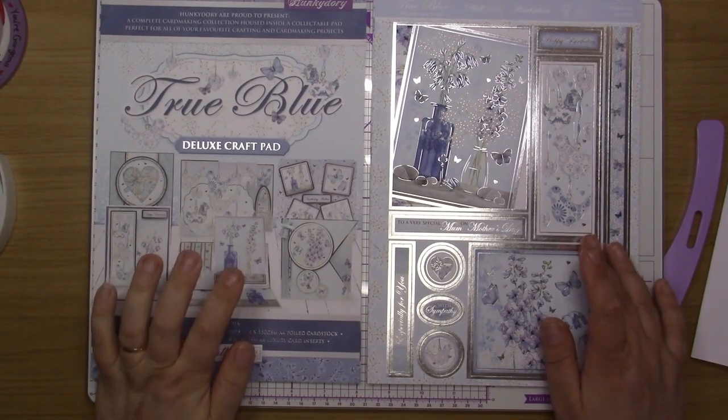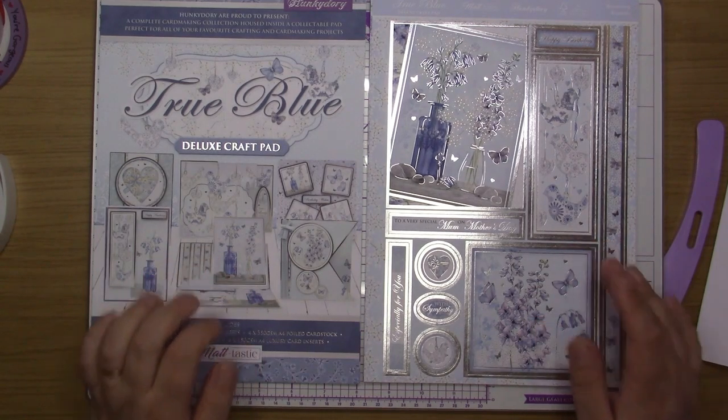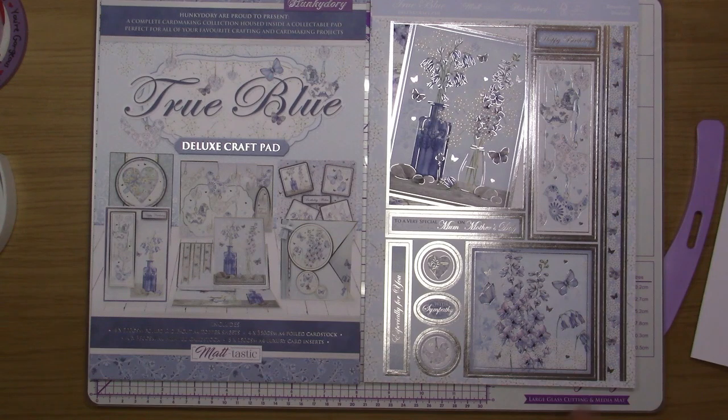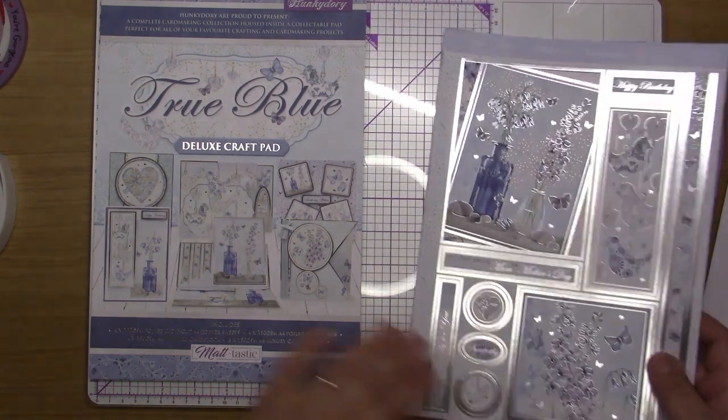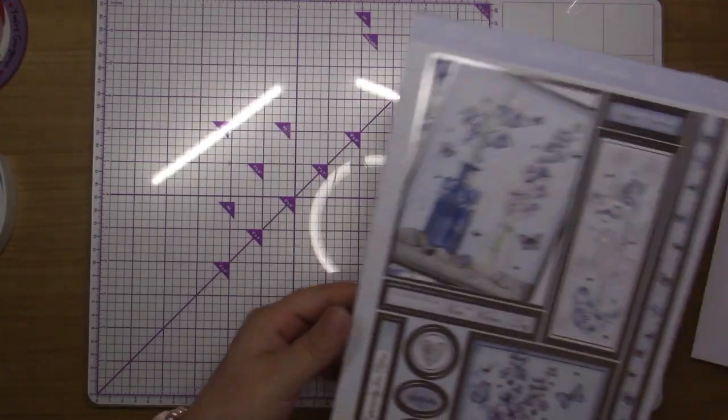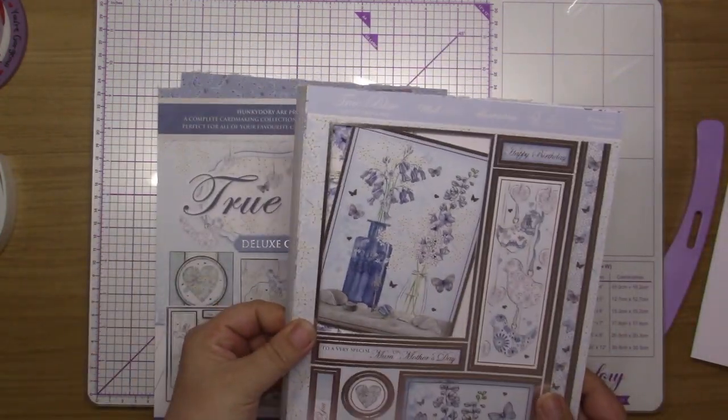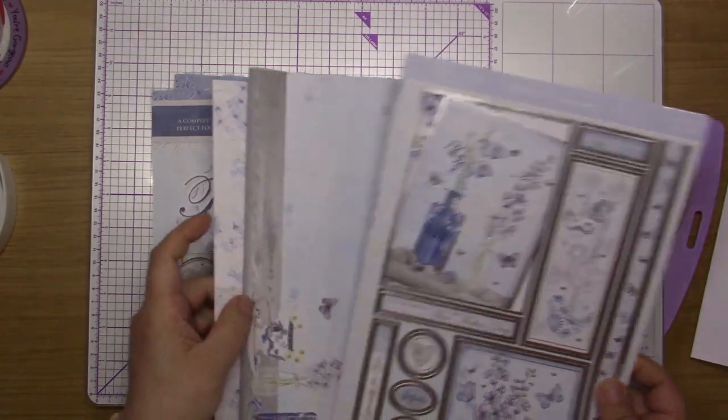Alright, and welcome back to my channel. So as I said in my last video, I was coming back with the True Blue deluxe craft pads. So I've picked the Blossoming Bluebells, and I'd just like to say thank you to everybody that has subscribed and that has taken part in my competition.